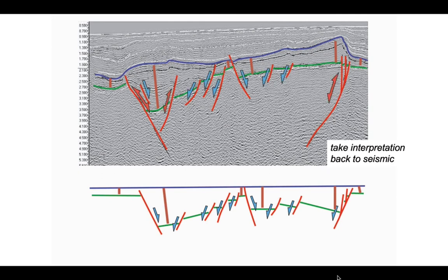These were formed by the time the blue horizon was deposited. Now we can take this interpretation back to the seismic. You'll see that we've got an array of normal faults shown with those blue half arrows, and the double-headed arrows show faults that have moved afterwards, deforming the blue horizon.